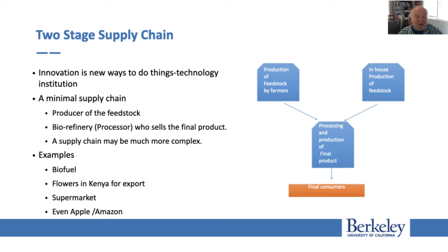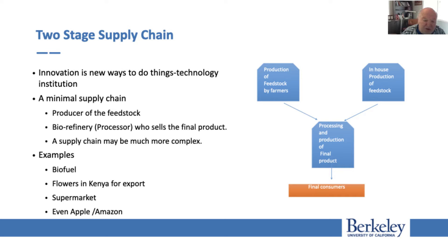An example: biofuel. Farmers use coal or sugar cane, companies buy it, refine it, and produce biofuel to sell. Regular oil: you have oil wells, then a refinery, then you sell to the final consumer. In many cases, you have new supply chains that are very creative. For example, a Danish company called Panuk developed a supply chain for flowers. They are grown in Kenya, processed in Kenya, shipped to Europe, and then distributed in Europe. So again, the feedstock is the flowers, the processing is shipping and selling.